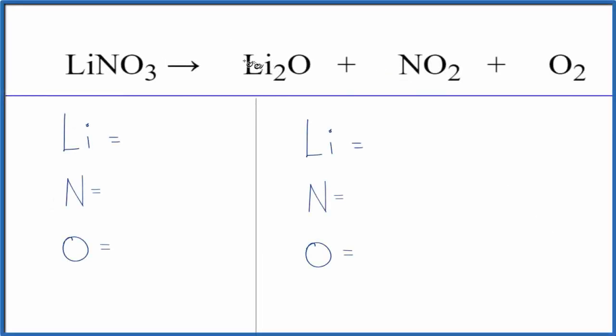In this equation, we have a decomposition reaction, LiNO3. It's breaking down into these three different compounds here. What makes this kind of difficult to balance is that we have oxygen in this one, this one, and this one. So since the oxygen is spread out, that often makes it more difficult to balance chemical equations.